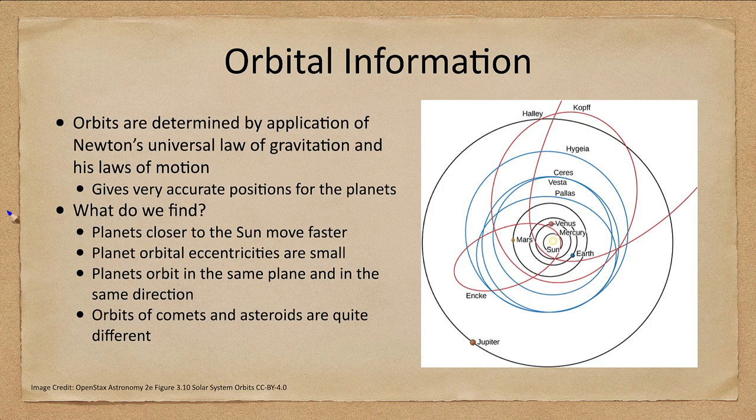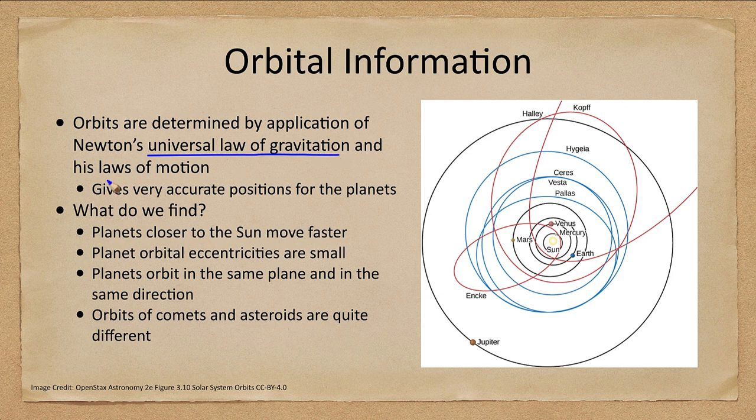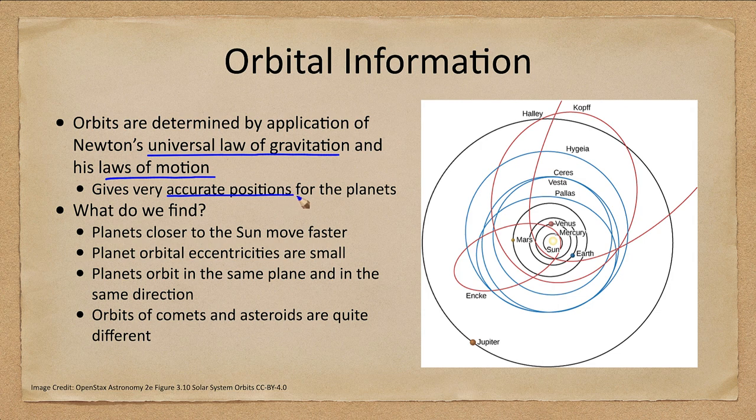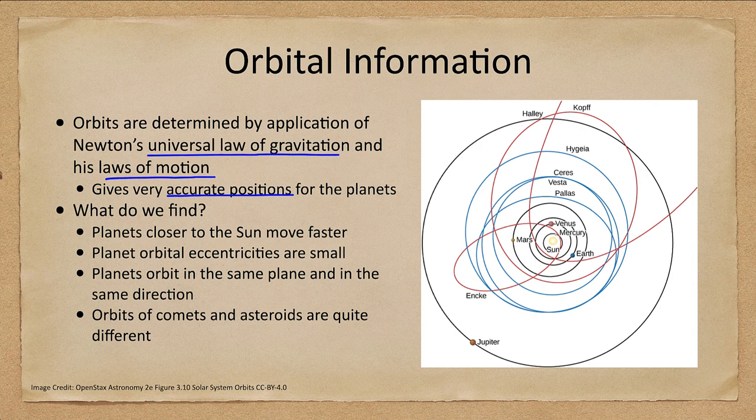How do we determine orbits? Orbits of an object are determined by Newton's universal law of gravitation and his laws of motion. This gives extremely accurate positions for the planets. And we find a number of different things. First of all, this was far more accurate than any of the previous models. And now we have an exact understanding of what that underlying cause is in terms of gravity.